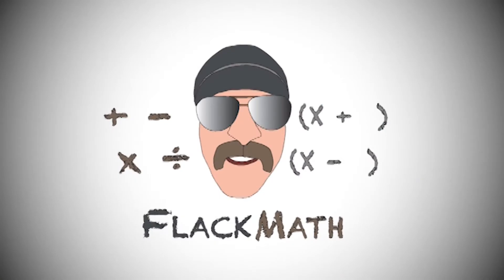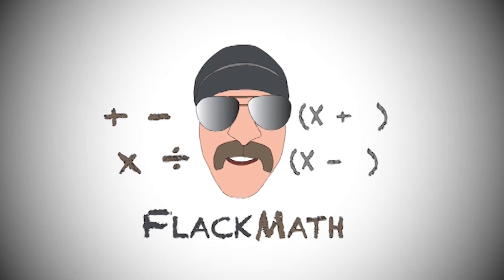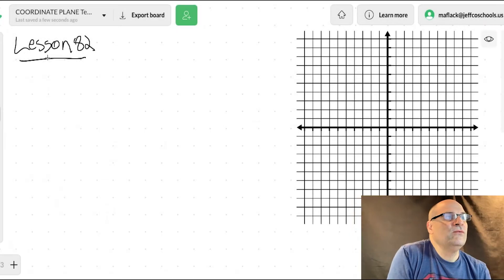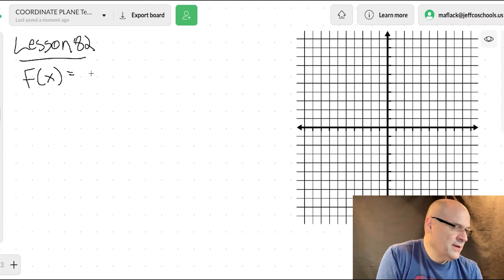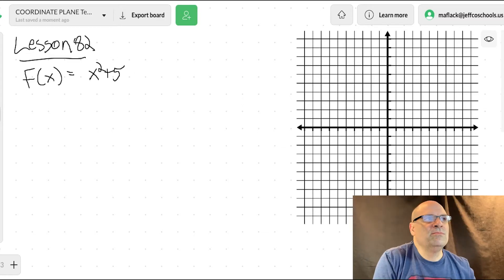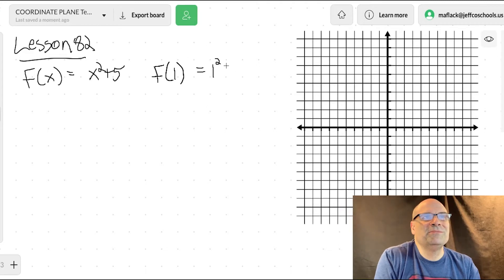Lesson 82: evaluation of functions. So if we have a function f of x equals x squared plus five, we can plug in any value of x. So if we plug in one, f of one equals one squared plus five, which equals one plus five, which is six.